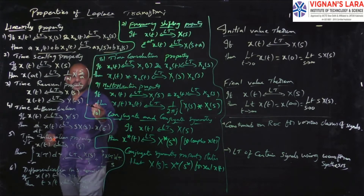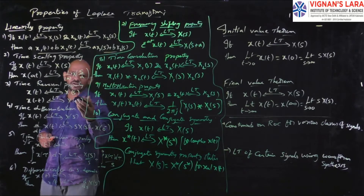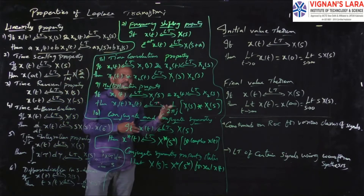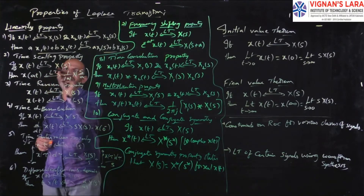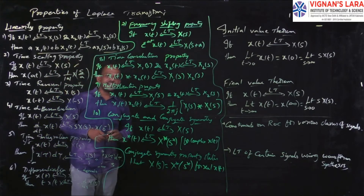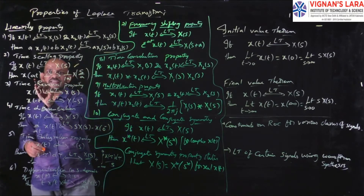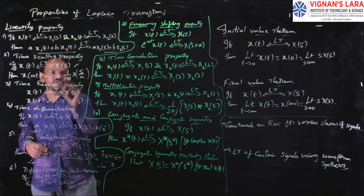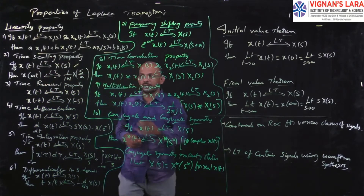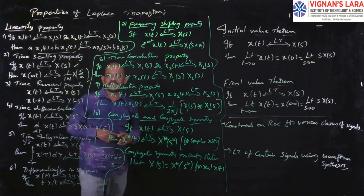Next is the time scaling property. If x(t) has Laplace transform X(s), then x(at) — time scaling — will have Laplace transform (1/|a|)·X(s/a).